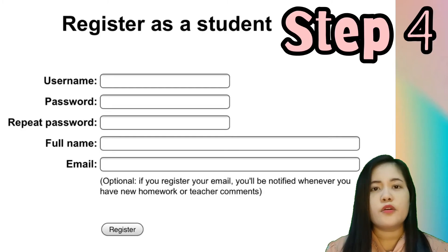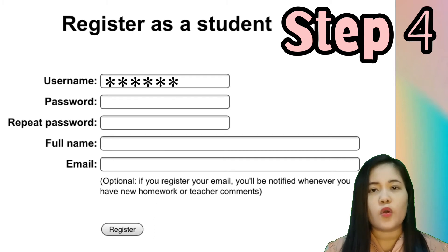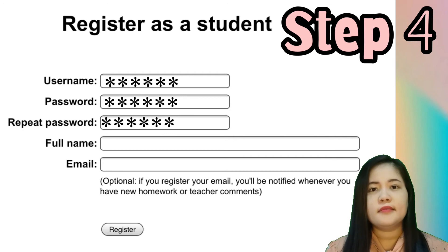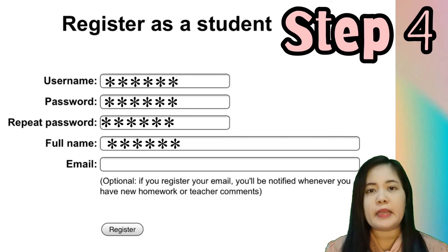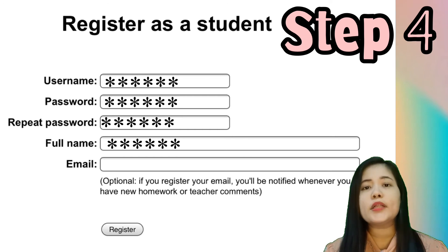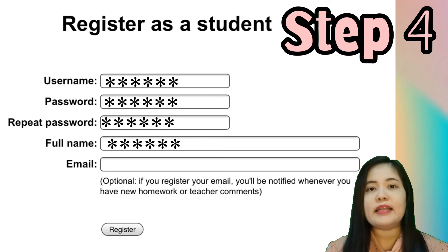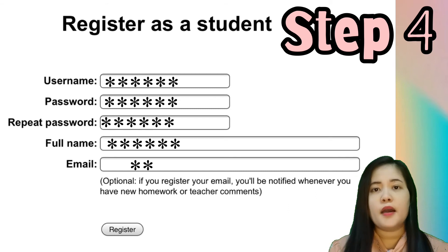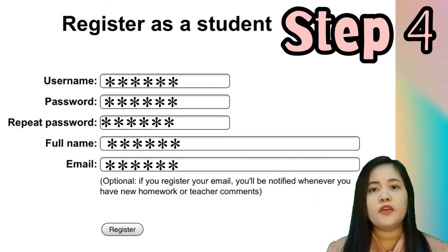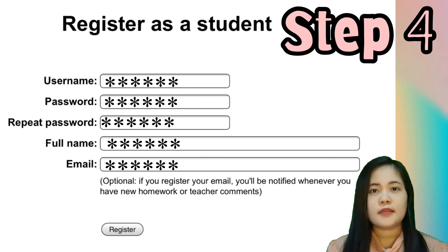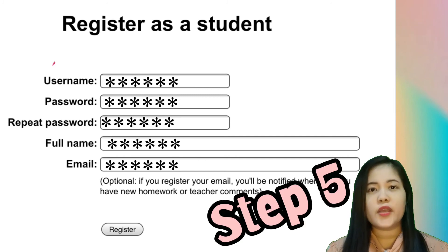In this window, you have to make your own username and your own password, then write the password again. On the fourth box, write your full name — it's very important that you write your own real name. In the last box, put in your email address, then click Register.